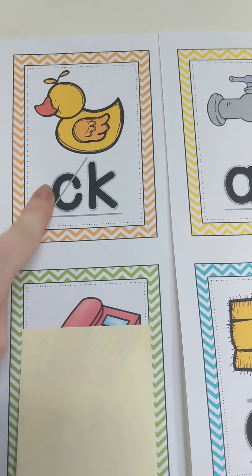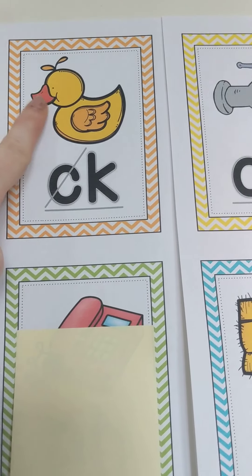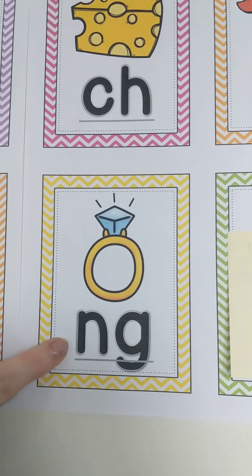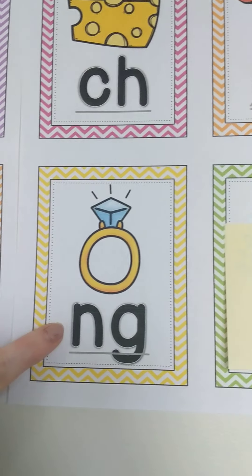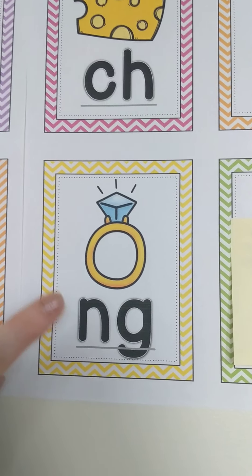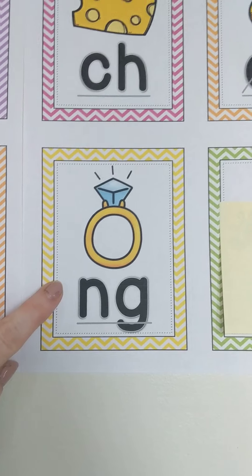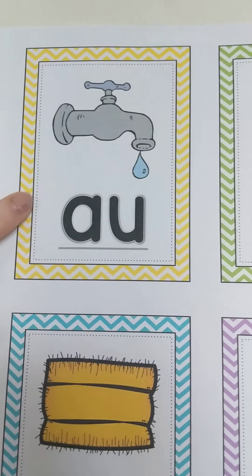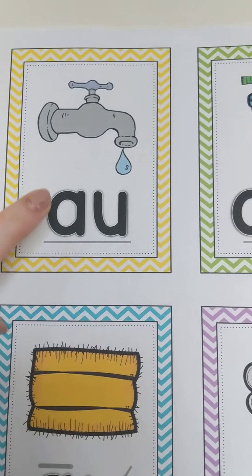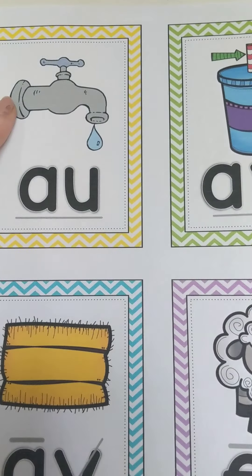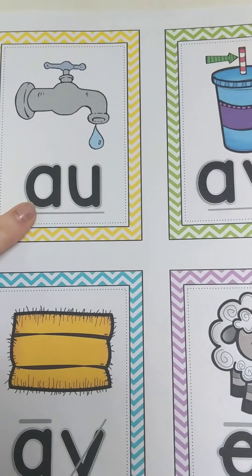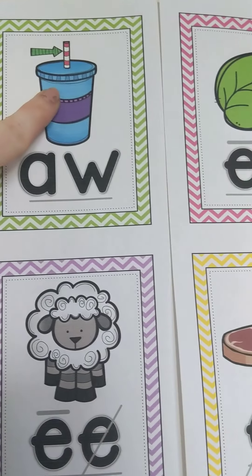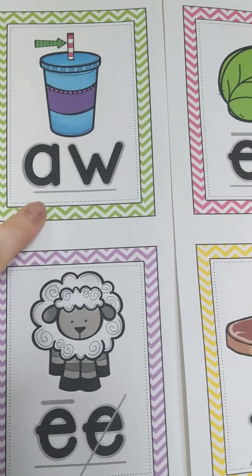Digraph C-K, duck, k. Digraph N-G, ring, ng. Oh, remember, Miss Henry does not like this sound. We have digraph A-U, faucet, aw. Digraph A-W, straw, aw.